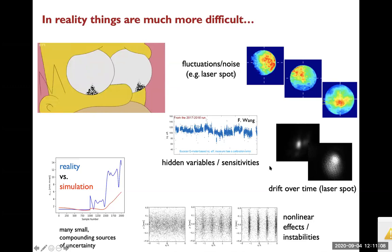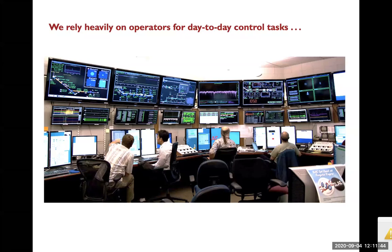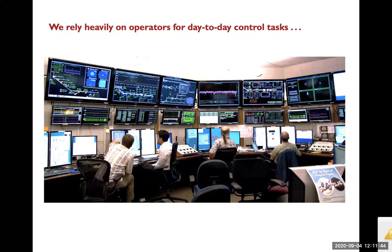A field map for an accelerator component might not be exactly correct, so we often have large gaps between observed system behavior and our simulations. In some cases we rely on fundamentally nonlinear effects — the free electron laser at LCLS, for instance, has a basic operating principle that relies on a nonlinear instability. In practice, we end up relying heavily on human operators to control the machine.